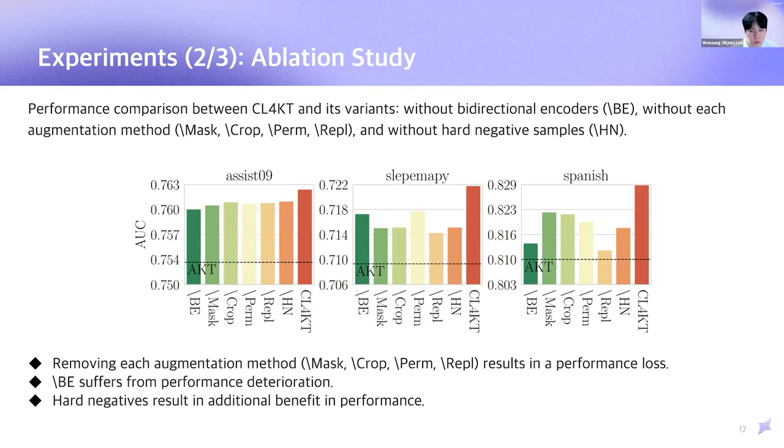Second, one without bidirectional encoders suffers from performance deterioration, which means the importance of considering bidirectional context in learning representations for knowledge tracing. Lastly, one without hard negatives also suffers from a performance drop, which shows that there exists additional benefits of using hard negative samples.